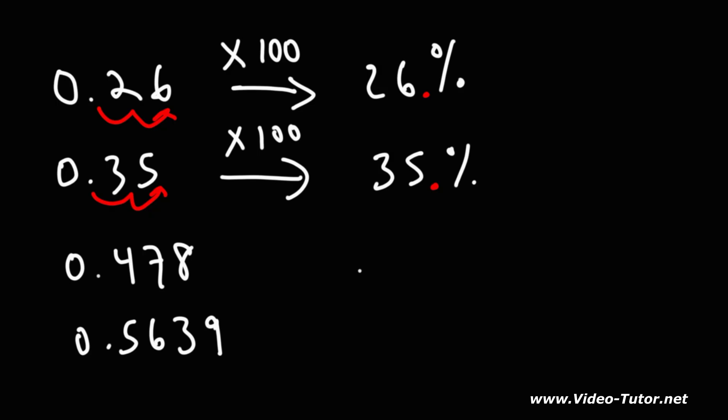Now what about 0.478? If we multiply that by 100, the decimal point will be between the seven and eight.